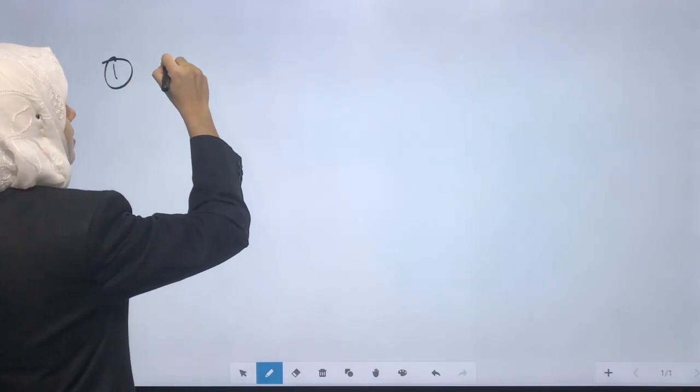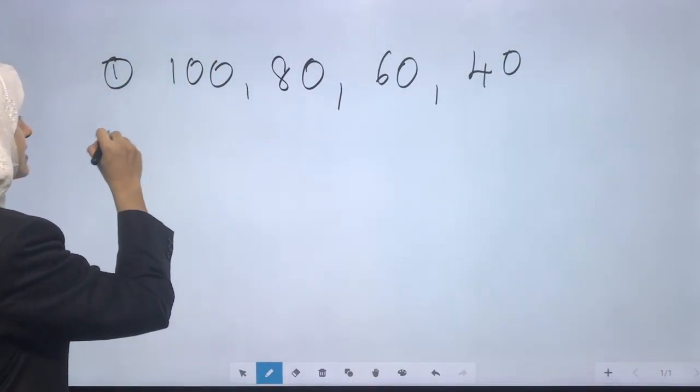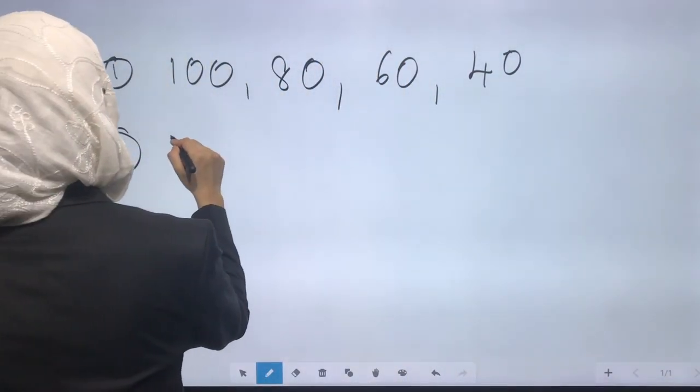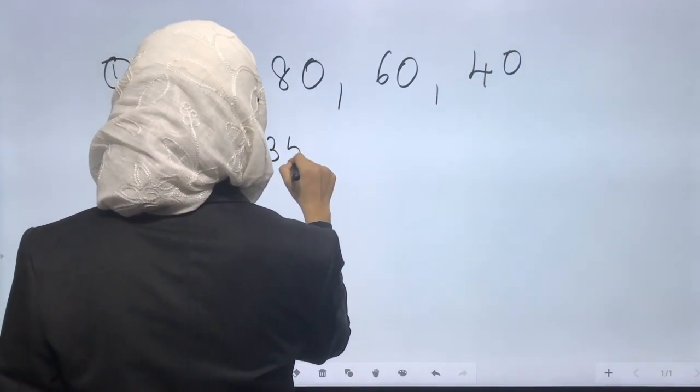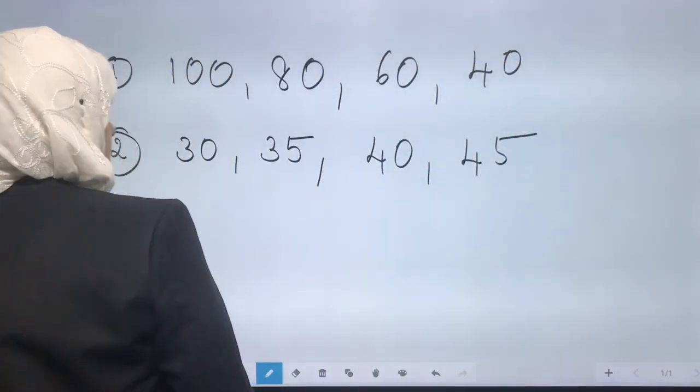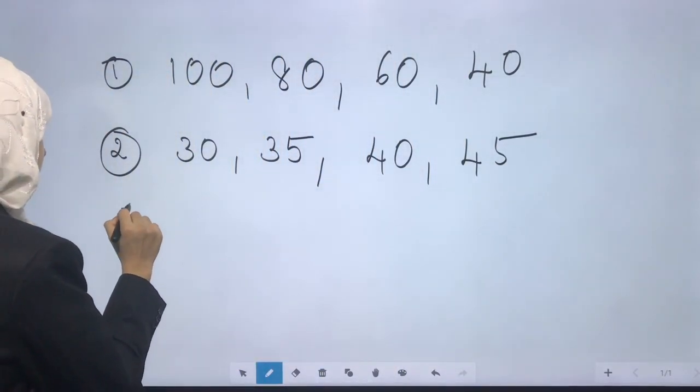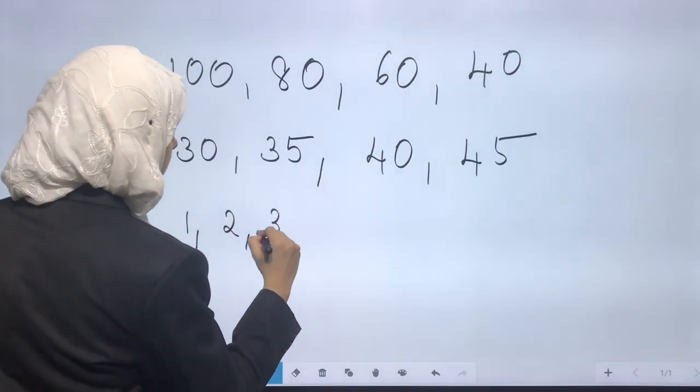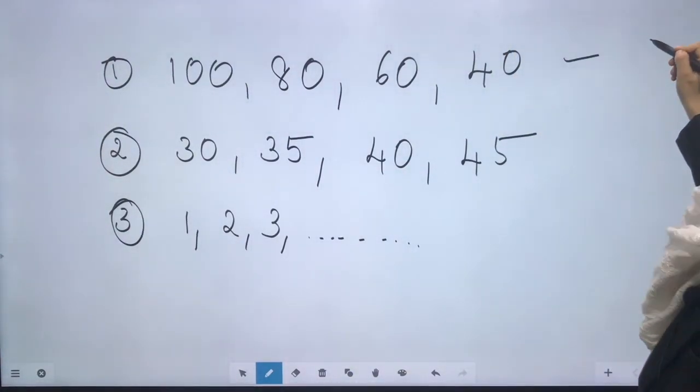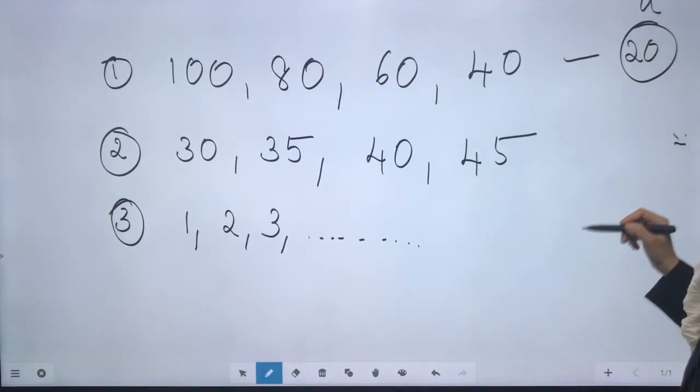First one... okay, now second example... let us write another example. Now let us write the list of natural numbers. So these three examples are APs: first one with common difference 20, second one with common difference 5.